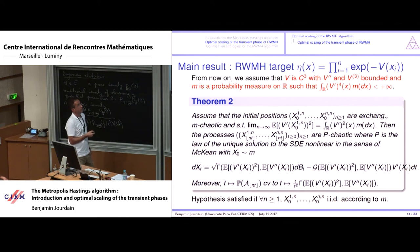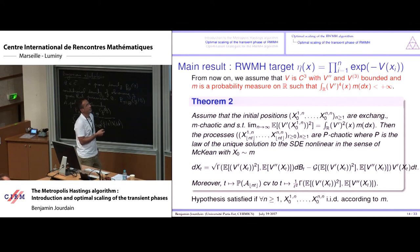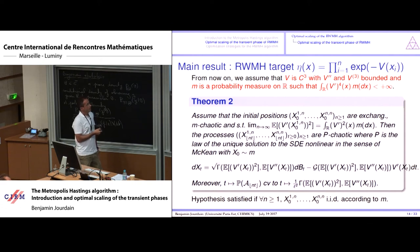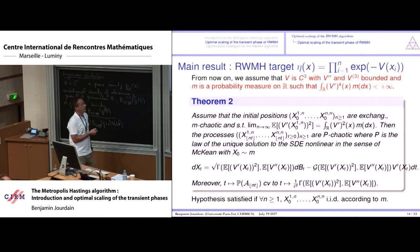The main result is: if V has bounded second and third order derivatives, m is a probability measure on R such that the fourth order moment of V' is finite, and if the initial positions are exchangeable, m-chaotic, and satisfy a certain limit condition, then there is propagation of chaos over time. We work in the same diffusive scaling, with time accelerated by factor n. The limit distribution is the law of the unique solution to an SDE nonlinear in the sense of McKean, involving moments of (V')^2 and V''.